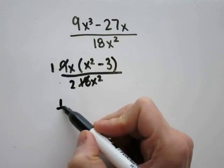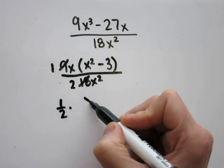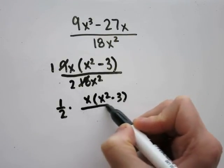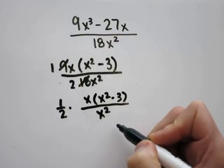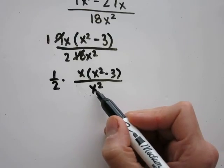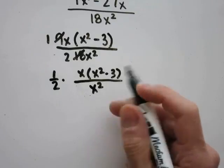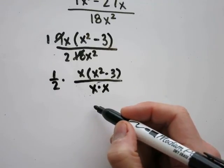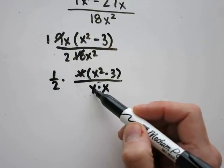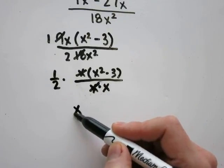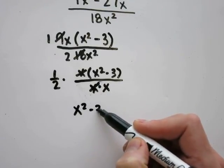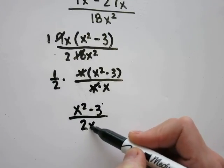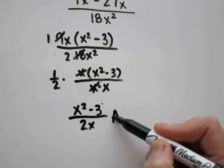Let me just rewrite this as 1 half times x times x squared minus 3 over x squared. In the denominator, x squared can be rewritten as x times x. The reason I rewrite it like that is so x will cancel out. That leaves x squared minus 3 over 2 times x, which is 2x. And this is the same as letter A.